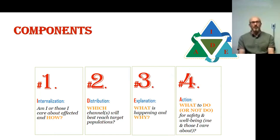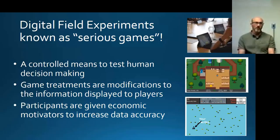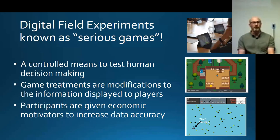When we're looking at messages, we're trying to develop messages that have all of these components and look at different aspects of those messages. The way we're doing that is through something known as a serious game or digital field experiment, where we put humans into a virtual environment and ask them to make a decision. We change the treatments in the game — for example, the information displayed to players.